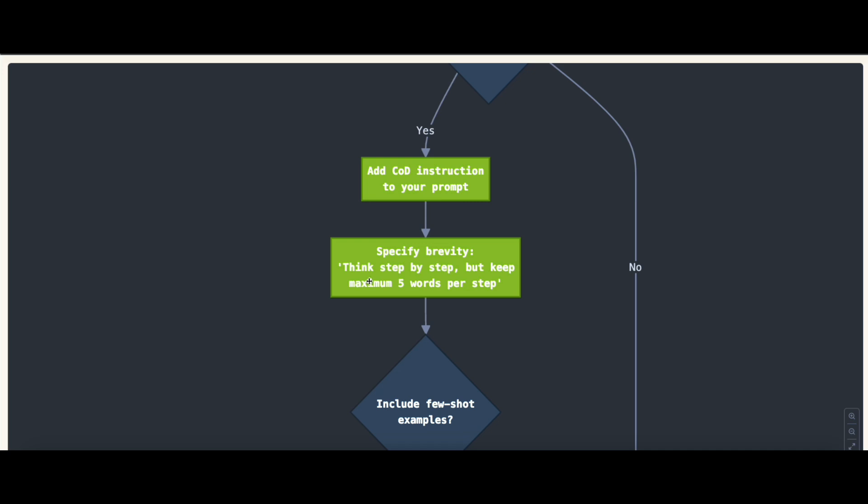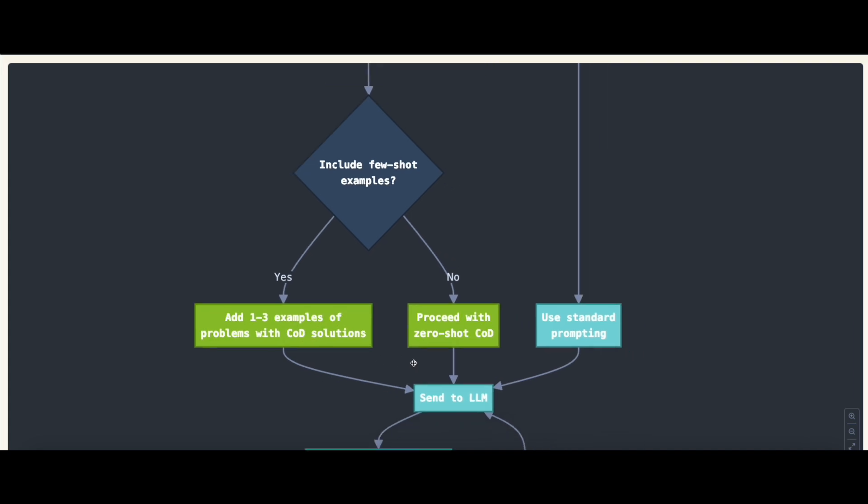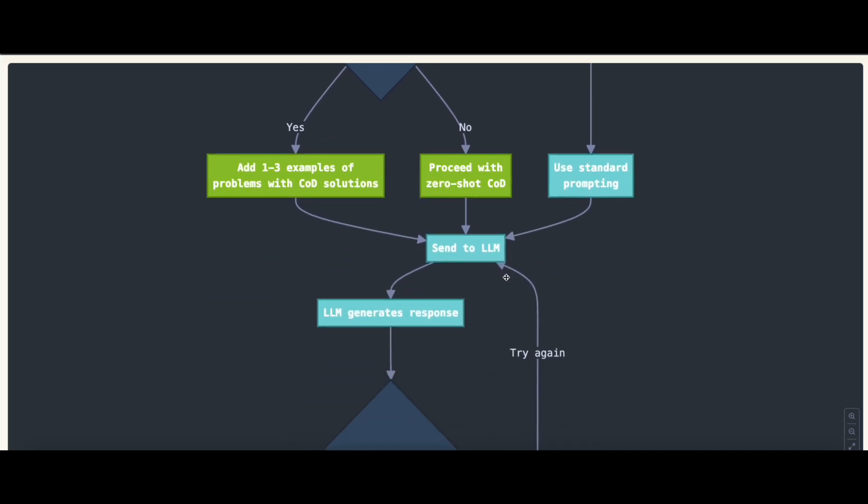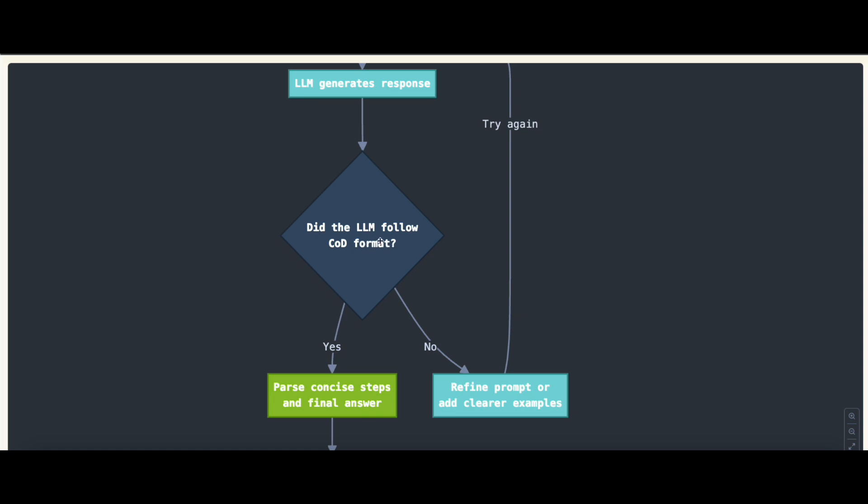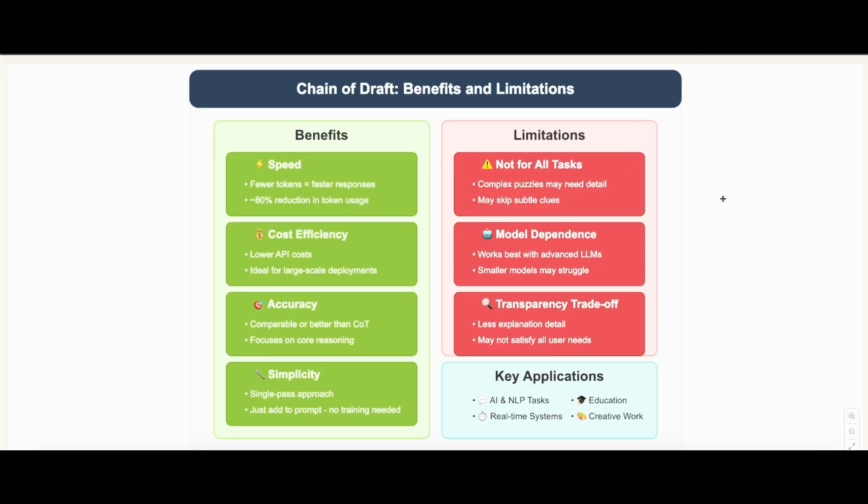This is what you need to add on top of your instructions in the prompt. Do you want to include few-shot examples? If you do, make sure you provide those answers or examples with Chain of Draft instructions—provide the reasoning with maximum five words so the language model understands. Or if not, you can go with zero-shot and send it to the language model. Did the language model follow Chain of Draft format? If yes, you're good. If not, go back and refine your prompt to make sure you're being clear about how your model should think and what length is most important.